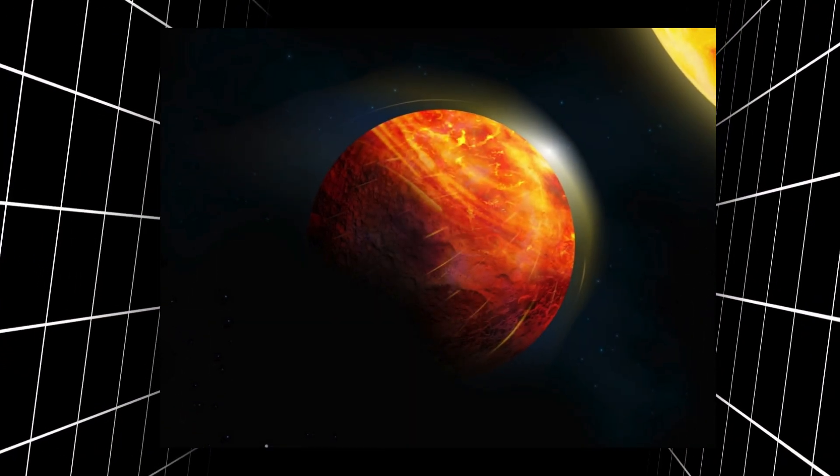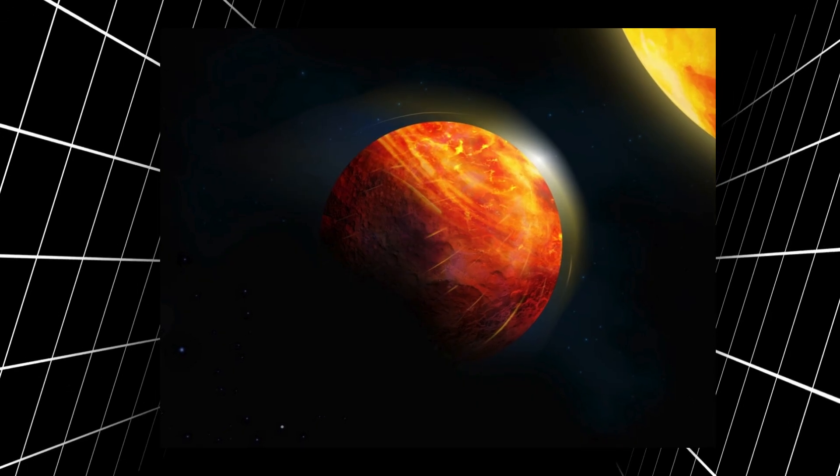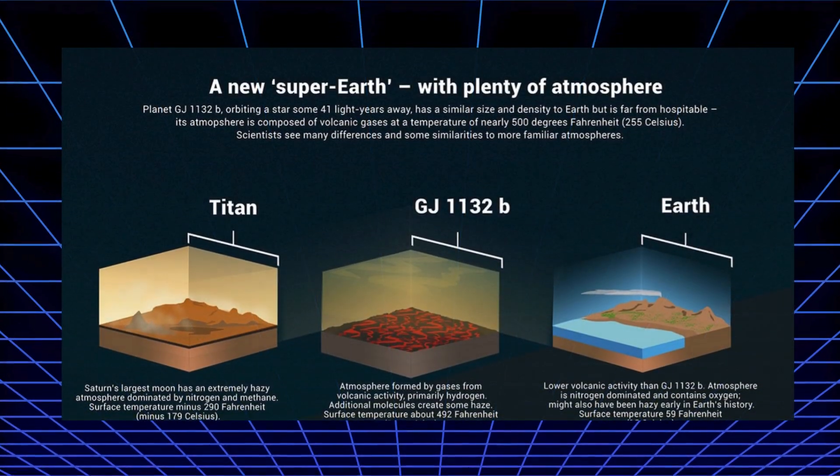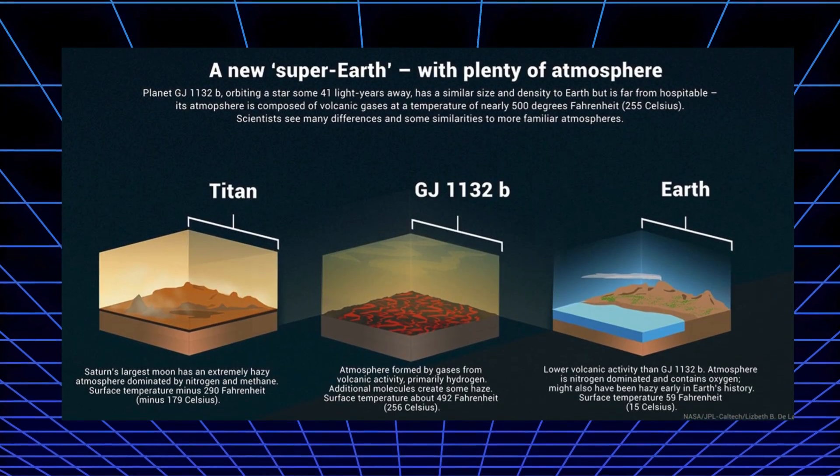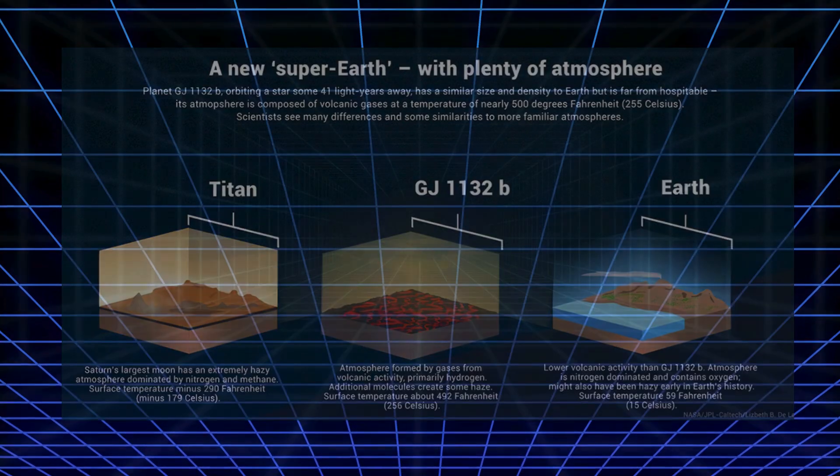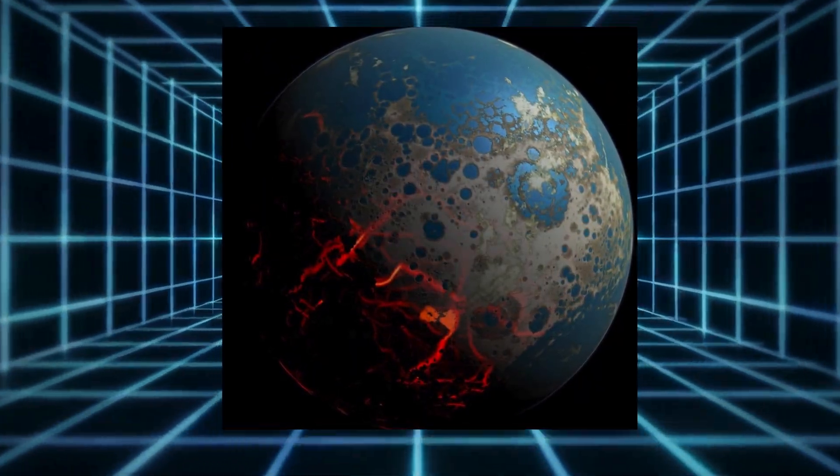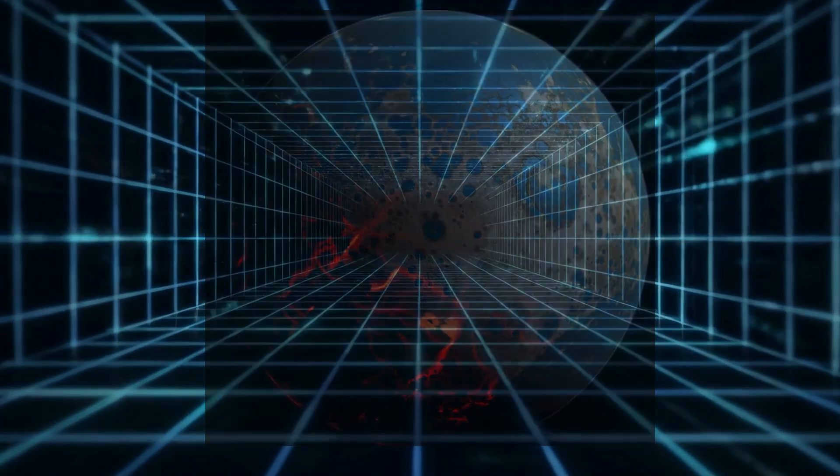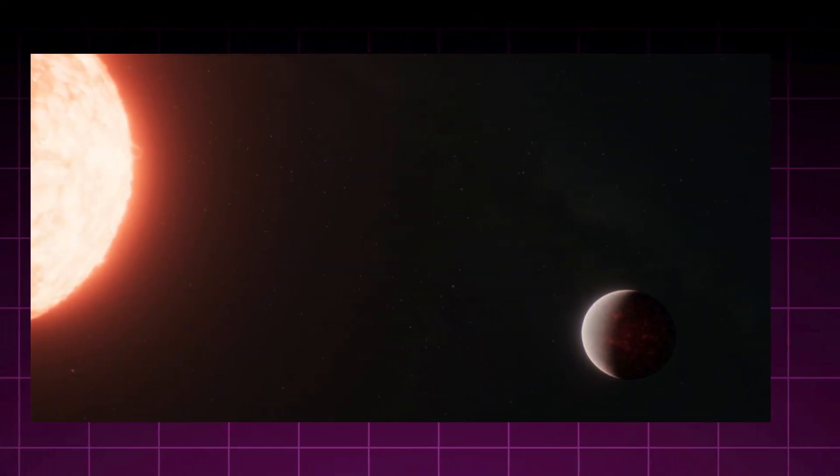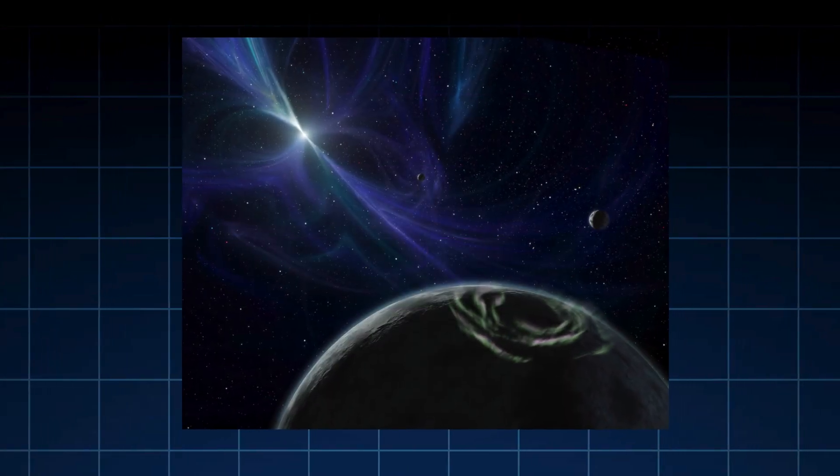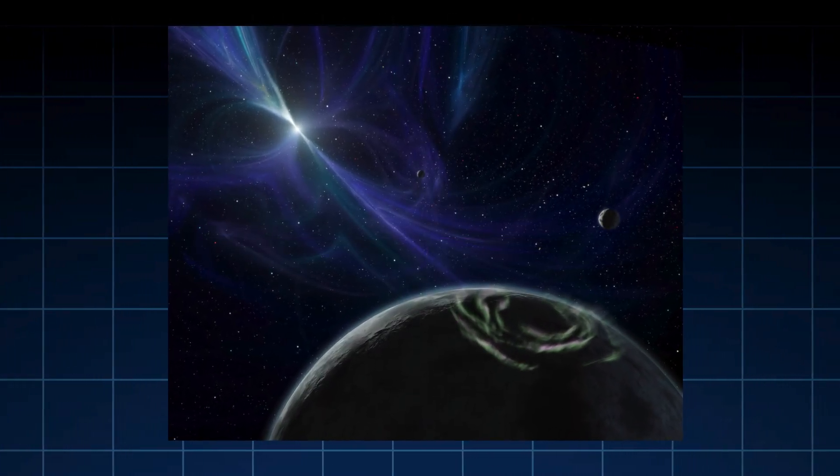The deepest unease stems not from isolated anomalies, but from their convergence. Webb finds resilience repeating: thick air on scorched rocks, exotic shrouds around stellar remnants, disequilibria in temperate envelopes, internal vigor sustaining the improbable. Randomness yields no such harmony. Patterns demand new principles, where planetary vitality emerges as the norm, not the rarity.